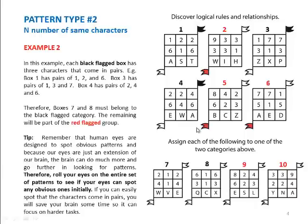When we look at the answer choices in the lower section, boxes 7 and 8 exhibit the same feature as the black boxes above. For example, box 7 has pairs of 1, 2 and 4, whereas box 8 has pairs of 1, 3 and 6. Therefore, these two boxes also must belong to the same category of the black flagged boxes above.